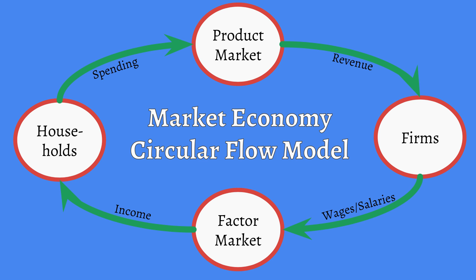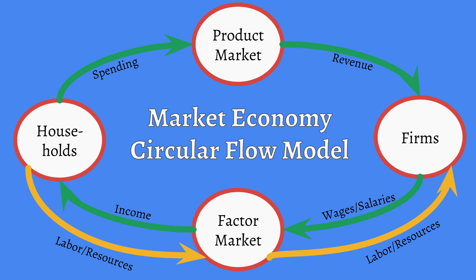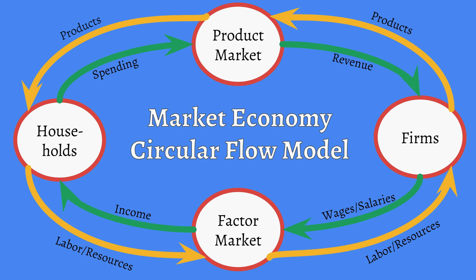But there's also an exchange that happens here. Households provide their labor and resources, and in exchange they get income. Their labor and resources go to the factor market, and from there they ultimately make their way to the firm. Firms need labor and resources to produce things. Once the firm has produced things — products, goods and services — those things make their way to the product market. So the factory sends its products to the store, to market. And once those things find a prospective buyer, they go all the way back to the households.